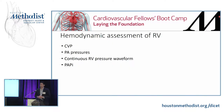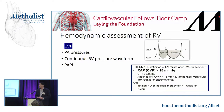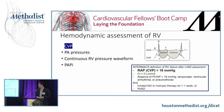Going through the hemodynamic variables, the first one is the good old standby CVP. CVP comes with a host of caveats — whether there's TR, increased intrathoracic pressure, patient positioning, dysrhythmias. But considering all that and taking it into account, CVP can still be extremely useful when you're using it as part of your RV assessment.